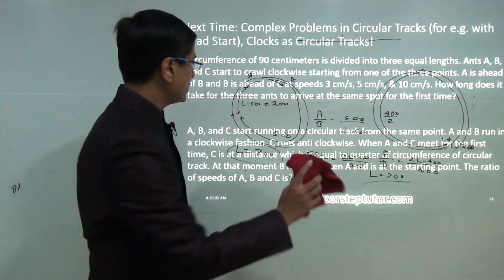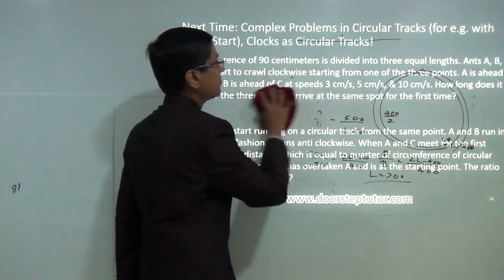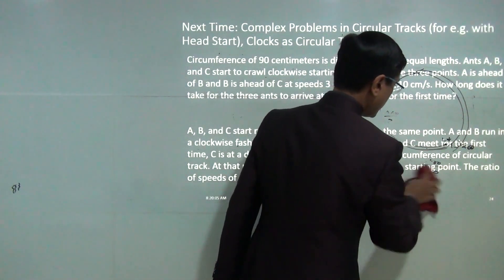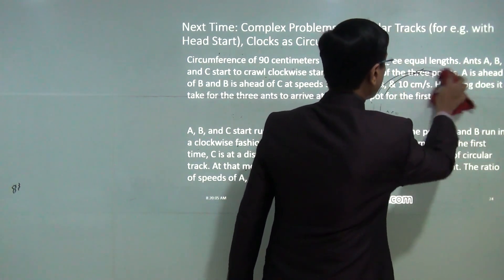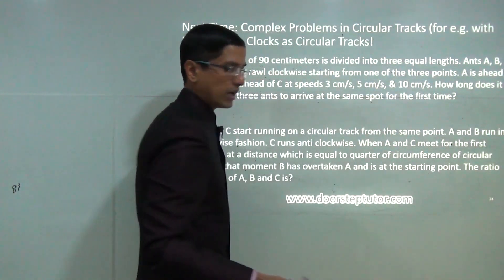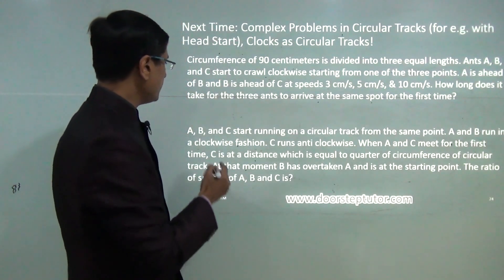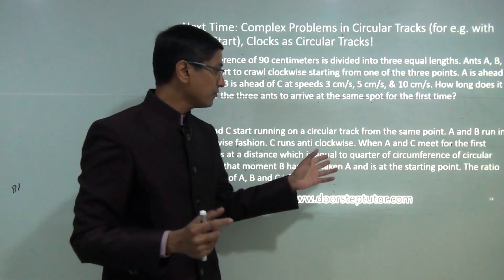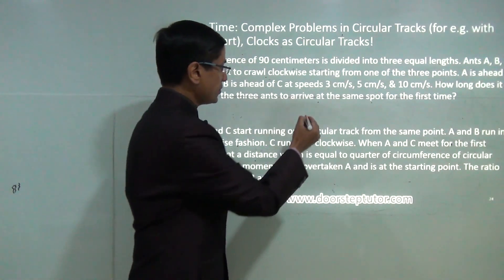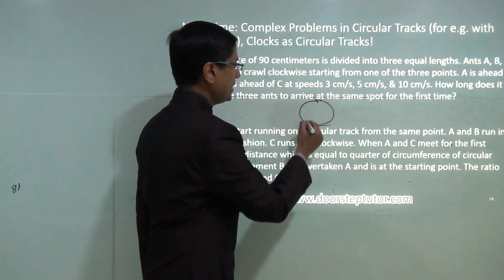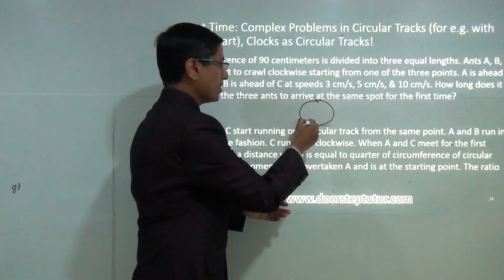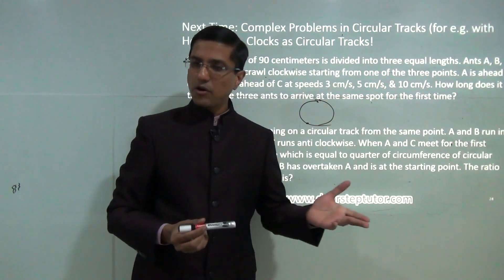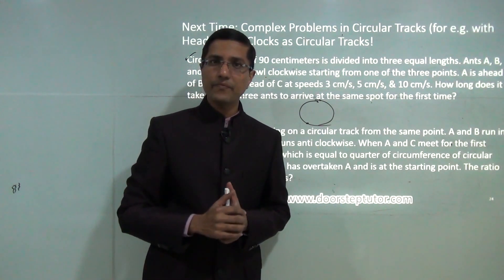The key insight across all meeting-point problems is that meeting points are symmetrical in both time and distance. With this, we end this class. In subsequent classes we will solve trickier problems involving circular tracks — those with head starts, participants starting at different positions, and conditions where participants reach diametrically opposite points rather than the same point. Subscribe to the channel and feel free to ask questions. Thank you.